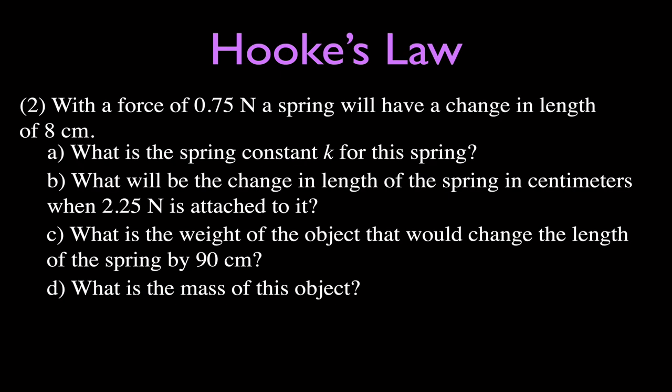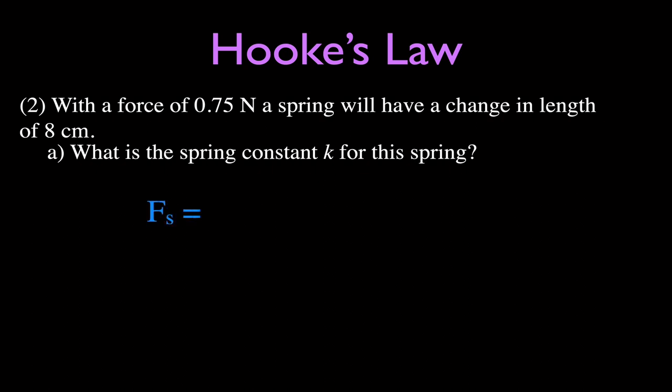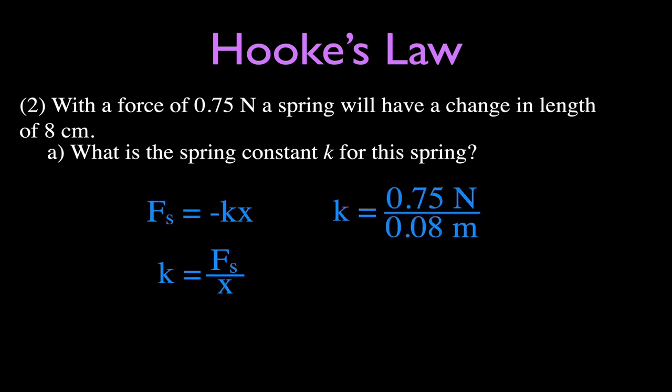Problem two is a bit more involved. A force of 0.75 newtons is applied to a spring, giving a change in length of 8 centimeters. We want the spring constant first. Dividing force by change in length — 0.75 newtons divided by 0.08 meters — gives us k equals 9.4 newtons per meter. That means 9.4 newtons of force would change the spring by 1 meter.